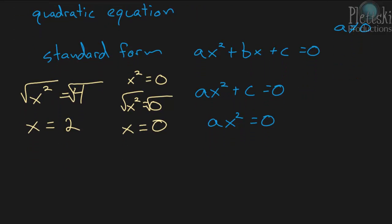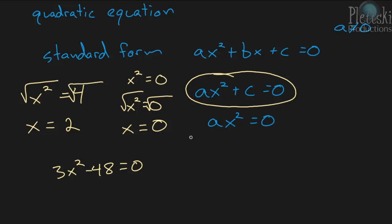Another example: if we had 3x squared minus 48 equals zero, is this in standard form? Yes — we have our ax squared term, which is 3x squared, so a is 3, and minus 48. In this case b is zero, so it's in the form ax squared plus c, where c is negative 48. What we want to do is get x squared by itself, so we add 48 to both sides.